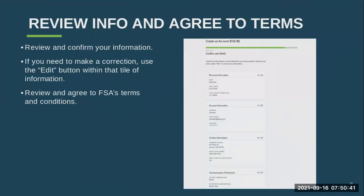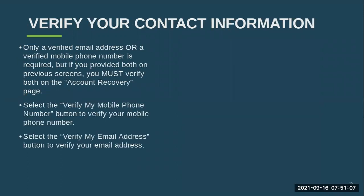We are going to review and agree to the terms. You're going to go through and make sure all of your information is correct — no typos. If you do need to make a correction, you can hit the edit buttons and edit your information. When that is done, you're going to review and agree to FSA's terms and conditions. From there, you only have one more step.